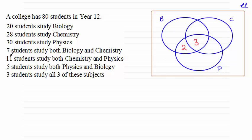And now we've got the 11 students studying both chemistry and physics. So we've got 11 students scattered across these two regions. So that means that that must be eight in there. So that eight and three make 11.